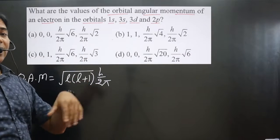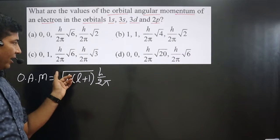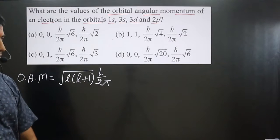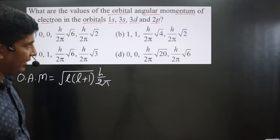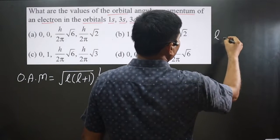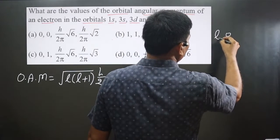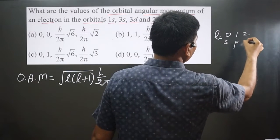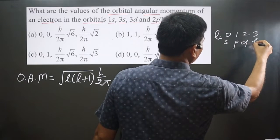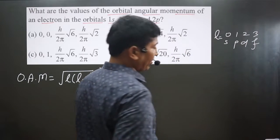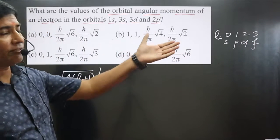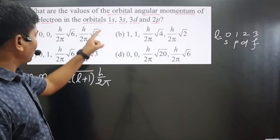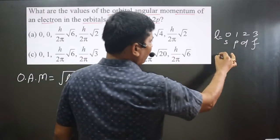If we know the l value for each orbital, we can calculate the orbital angular momentum. Always keep in mind: l = 0 for s orbital, l = 1 for p orbital, l = 2 for d orbital, and l = 3 for f orbital. So if orbitals are given, we can identify the l value.